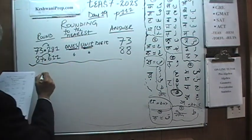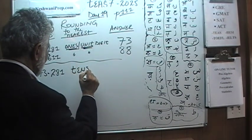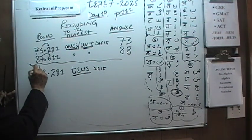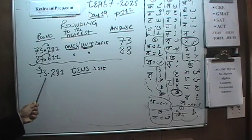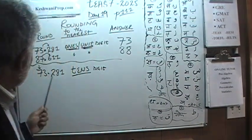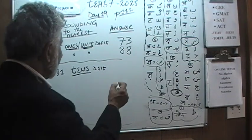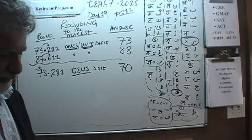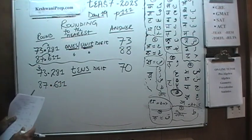Now we are going to round 73.281 to the nearest tens digit. The tens digit is the 7 right here — this tells us how many tens we have. The digit to the right of it is 3, which is not equal to or more than 5, so the 7 stays. 73.281 rounded to the nearest tens becomes 70. How about 87.611?